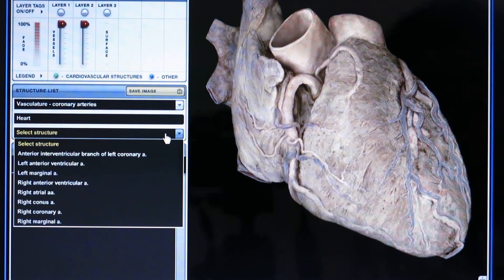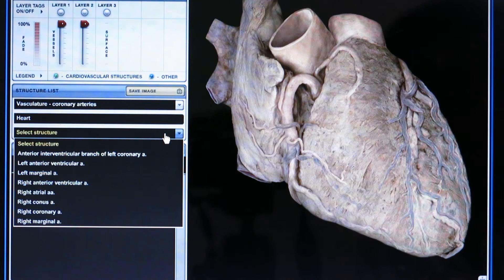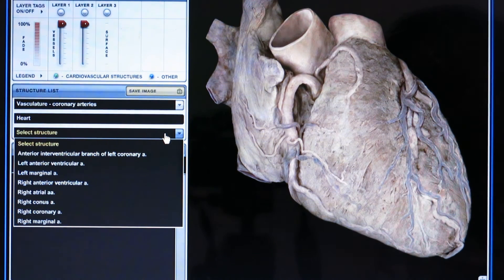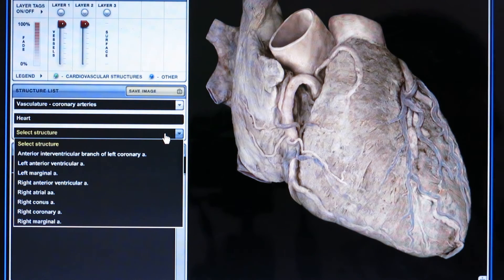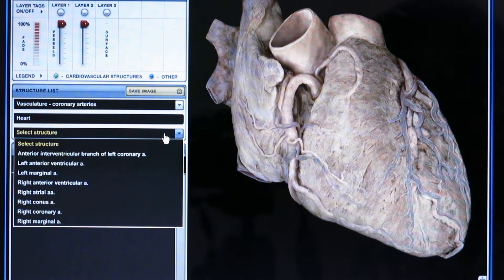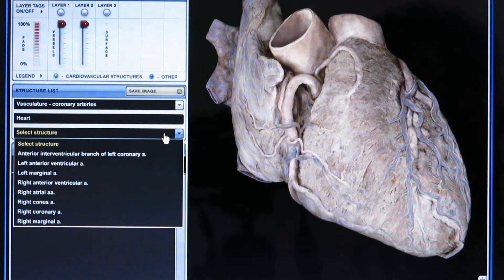Right anterior ventricular artery, left anterior ventricular artery, left marginal artery, right atrial artery, right coronary artery, right marginal artery, and right conus artery. So details of arterial structures of the heart are not much important for you, but still any...